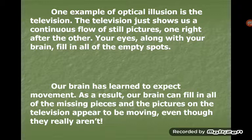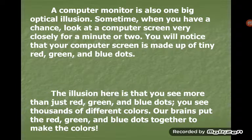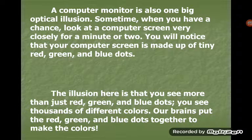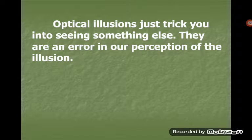Even so, they really are not. A computer monitor is also one big optical illusion. Sometimes, when you have a chance, look at a computer screen very closely for a minute or two. You will notice that your computer screen is made up of teeny red, green and blue dots. The illusion here is that you will see more than just red, green and blue dots — you see thousands of different colors. Our brain puts the red, green and blue dots together to make the colors. Optical illusions just trick you into seeing something else. They are an error in your perception.